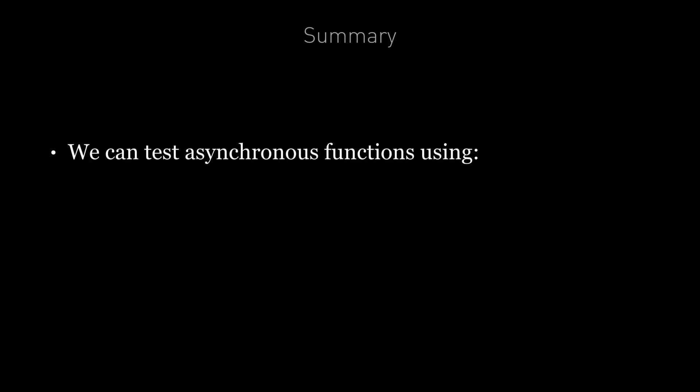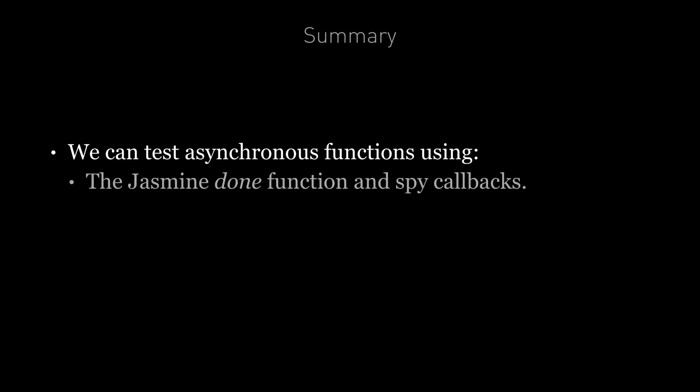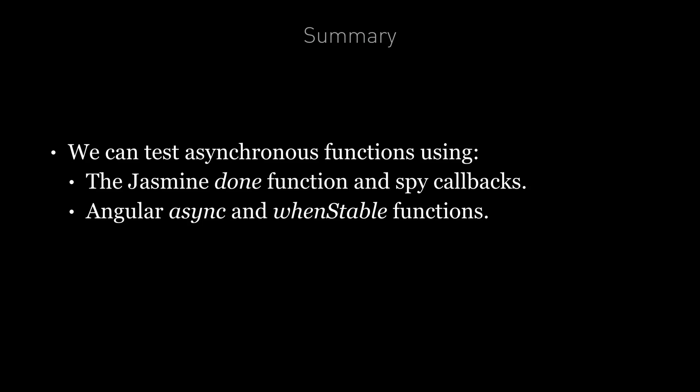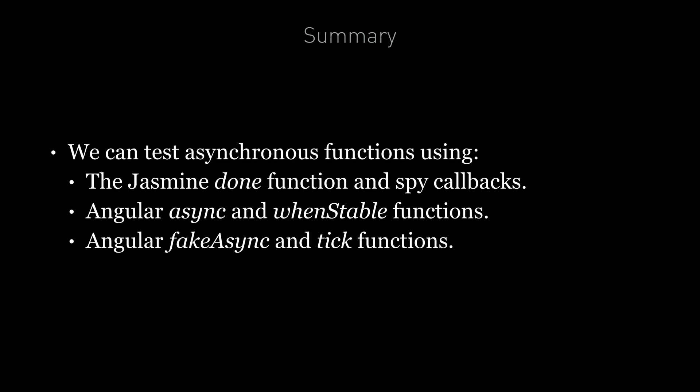To summarize: if the code we are testing is asynchronous, we need to account for this when writing our tests. There are three mechanisms. First, the Jasmine done function with spy callbacks — we attach callbacks to spies to know when promises resolve, add test code to those callbacks, then call done. This works but requires knowledge of all promises in our application. Alternatively, we can use the Angular async and whenStable functions — we don't need to track promises ourselves, but we still need callback-style layout which can be hard to read. Or we can use the Angular fakeAsync and tick functions, which additionally let us lay out asynchronous test code as if it were synchronous.